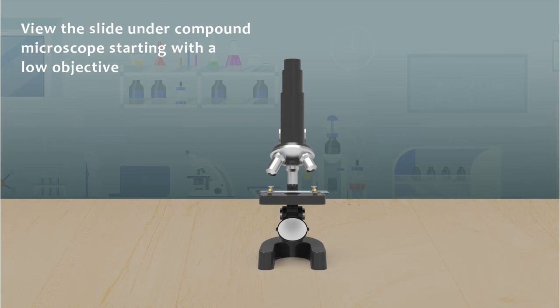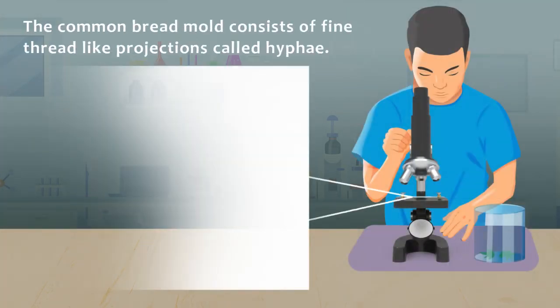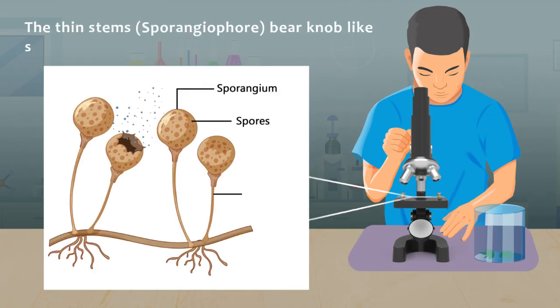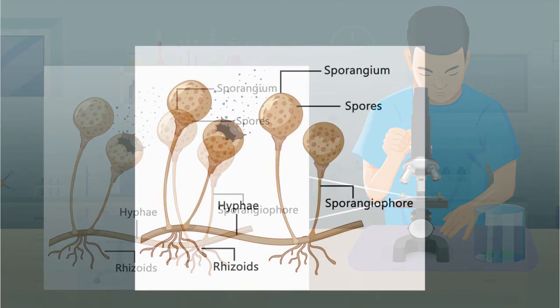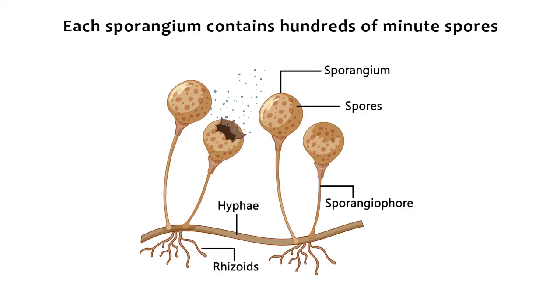The common bread mold consists of fine thread-like projections called hyphae. The thin stems bear knob-like structures called sporangia. Each sporangium contains hundreds of minute spores.